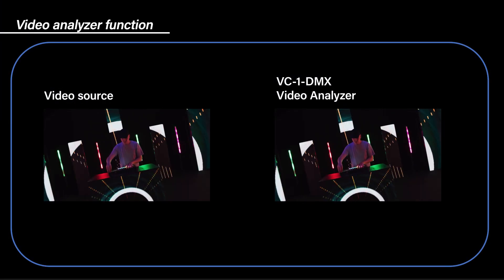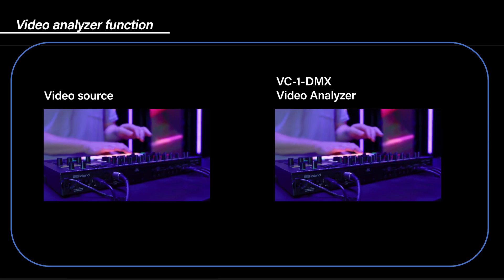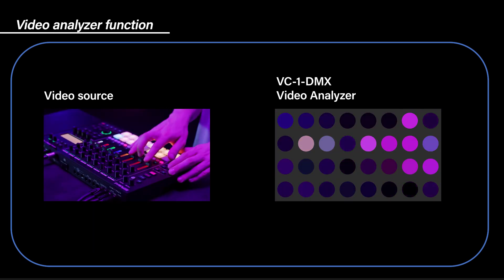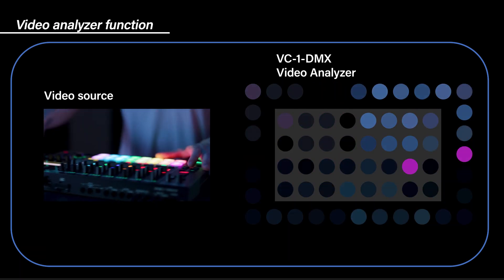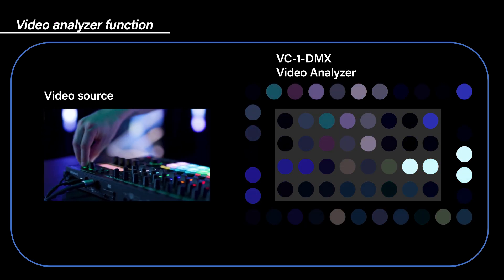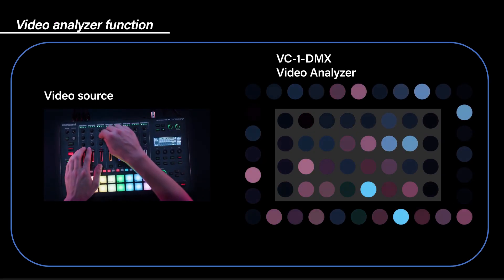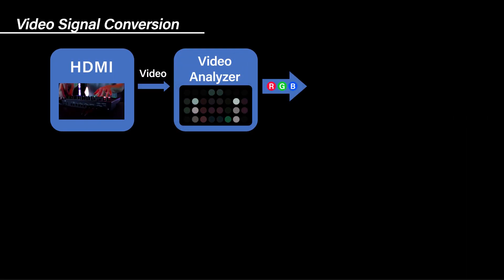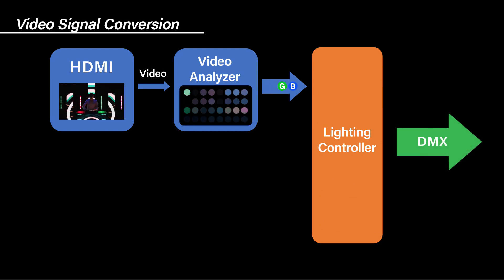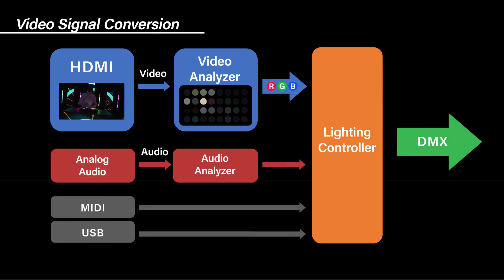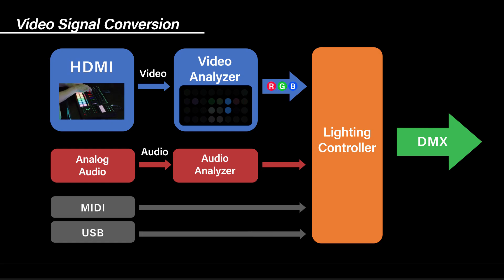The incoming HDMI video signal is mapped to a grid of 32 RGB color points, then analyzed and translated to a DMX signal that is transmitted to connected lighting fixtures. Audio and MIDI signals can also be analyzed and converted.